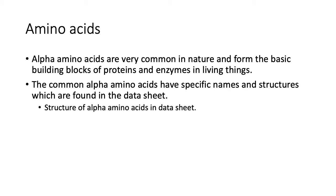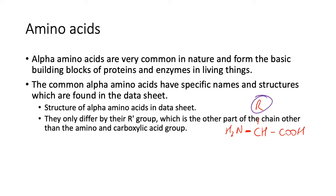You see the alpha amino acids in the data sheet. They are written in a very specific way. It's actually CH and then COOH, and then up here is something there. Each amino acid is different only in this part there. They only differ by their R' group, which is the other part of the carbon other than the amino and carboxylic acid chain.